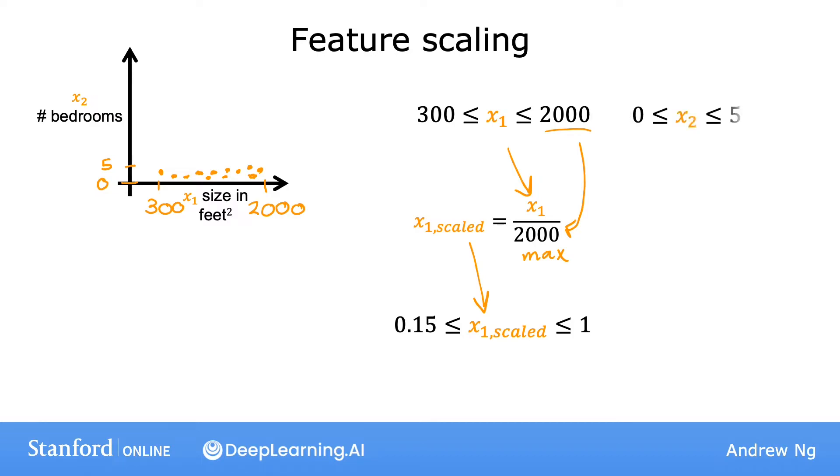Similarly, since x2 ranges from 0 to 5, you can calculate a scaled version of x2 by taking each original x2 and dividing by 5, which is again the maximum. So the scaled x2 will now range from 0 to 1.